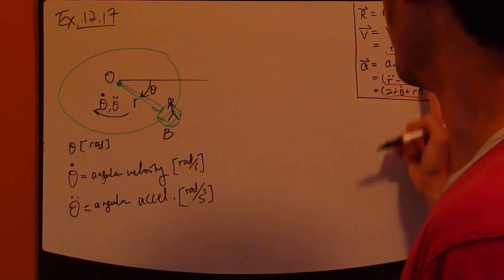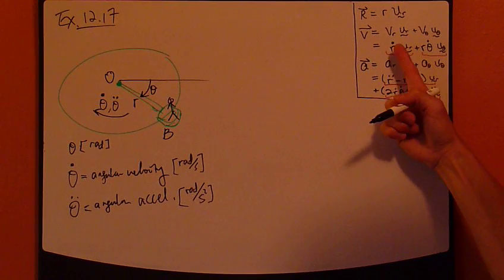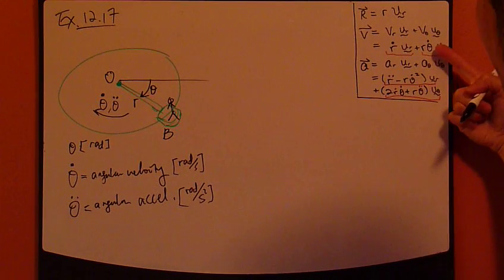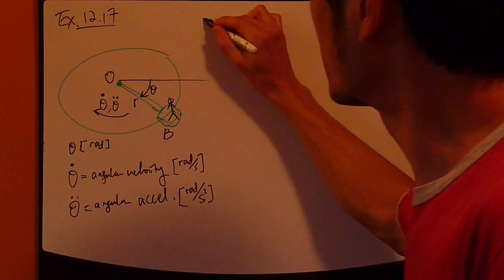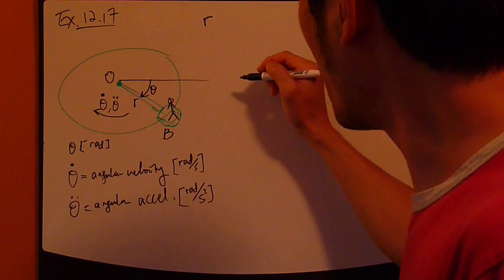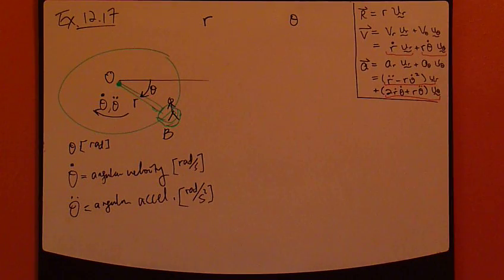So, look at what we need here. What's involved is just r and theta. So, you have r dot, r double dot, and then theta dot, theta double dot. So, just write down, for each. So, r and theta. What are they?